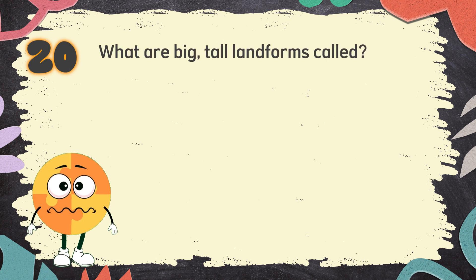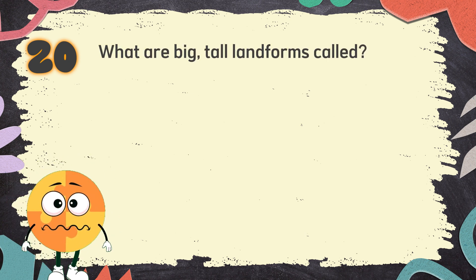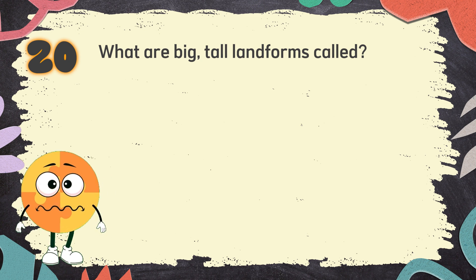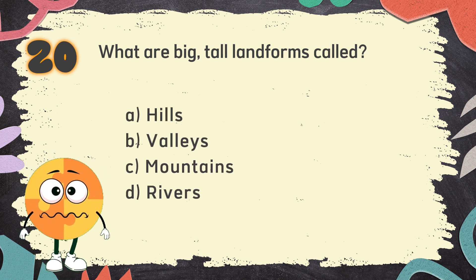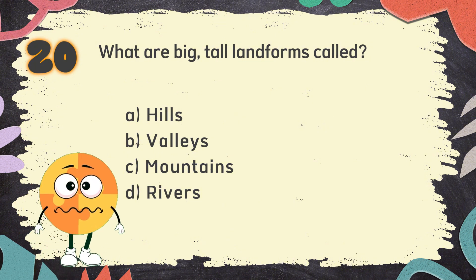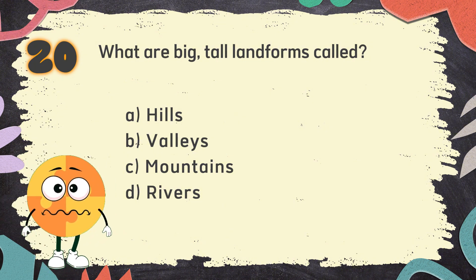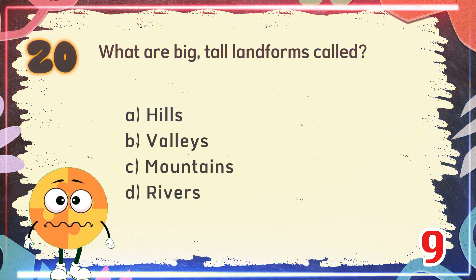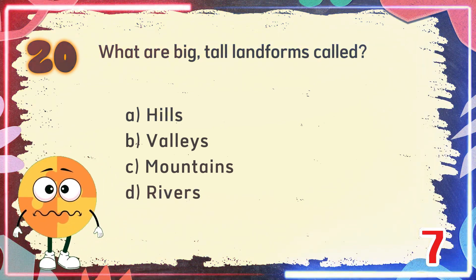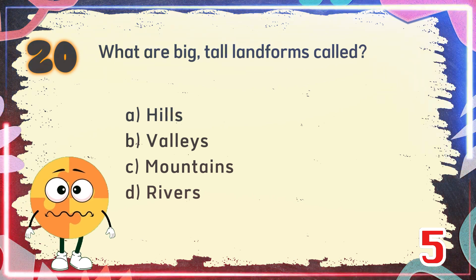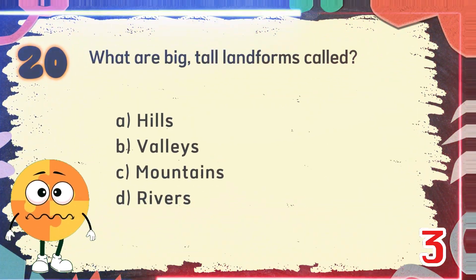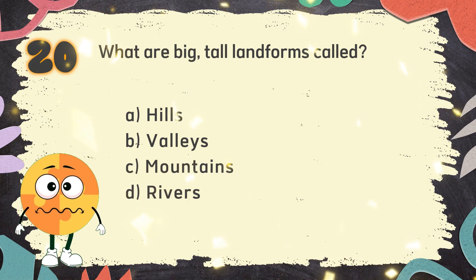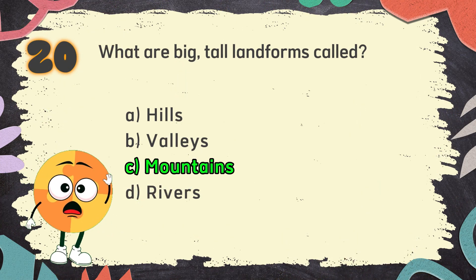Number 20: What are big, tall landforms called? The choices are: A. Hills, B. Valleys, C. Mountains, D. Rivers. The correct answer is C. Mountains.